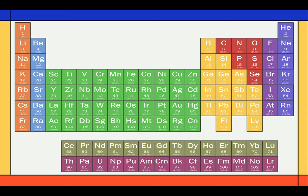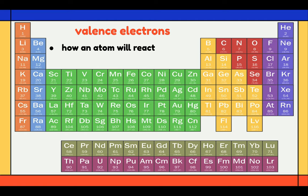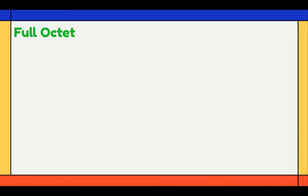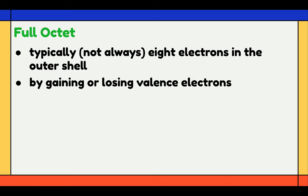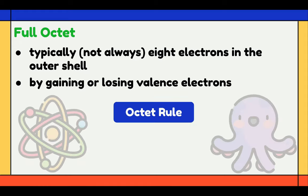A family in the periodic table is a set of elements that share the same properties. The characteristics each element displays is determined by the number of valence electrons. Valence electrons decide how the atom will react in a chemical reaction — they are the electrons in the outermost shell of an atom. Every element wants to have a full octet, which is typically, but not always, 8 electrons in the outer shell. To get a full octet, an element will either gain or lose valence electrons.